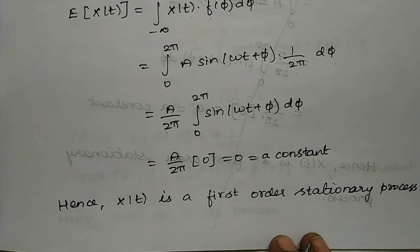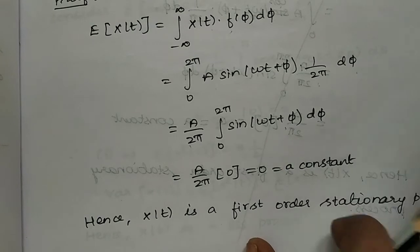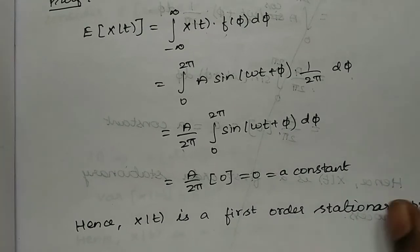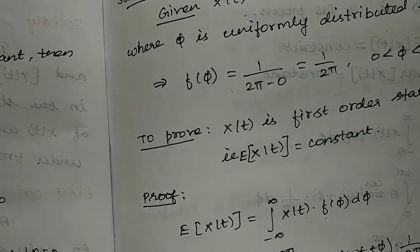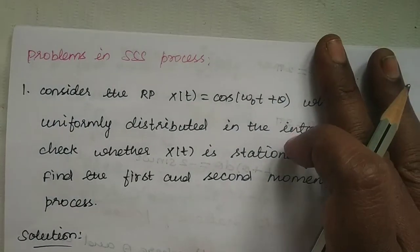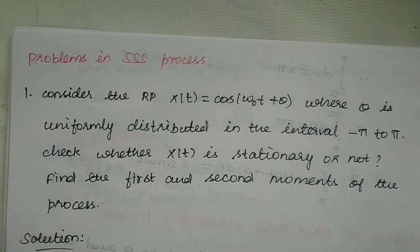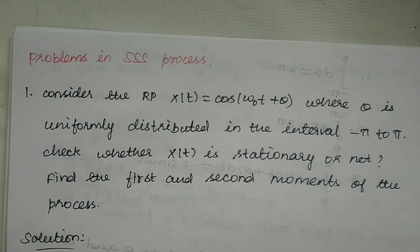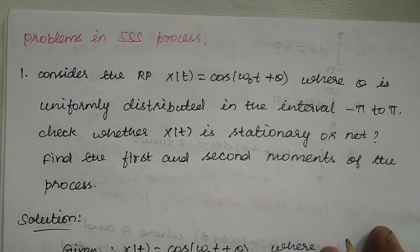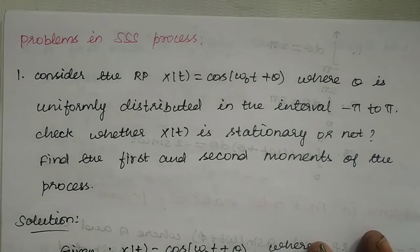The expectation of x(t) comes out to 0, which is a constant, so the mean is constant. Some problems will give 0, some will give numerical values. For first order stationary we only need to prove the mean is constant. Now we will prove second order stationary, otherwise it will be a WSS (wide-sense stationary) process. Here are 3 problems.